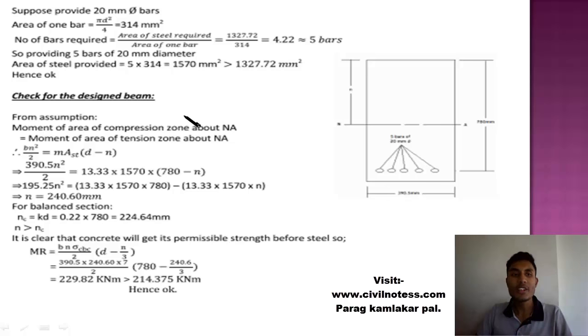But we have to check the designed beam. This check is important. During this check, what we have to assume is: moment of area of compression zone about neutral axis equals moment of area of tension zone about the neutral axis. The check is given by bn squared by 2 equals modular ratio AST into d minus n. From that you get the neutral axis, which is 224.64 mm.